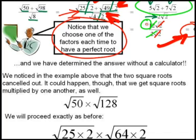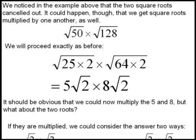6 without a calculator. We noticed in this example that there's two square roots cancelled out. It could happen though that we get square roots multiplied by one another as well.